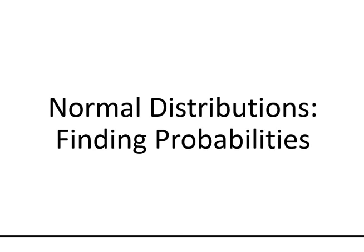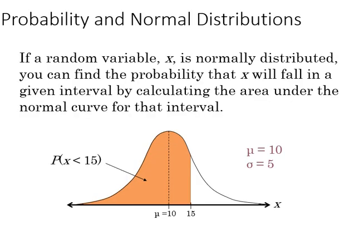Hi, this presentation is going to focus on finding probabilities using normal distributions. For a normal distribution, if a random variable X is normally distributed, you can find the probability that X will fall in a given interval by calculating the area under the normal curve, which we've taken a look at in previous presentations.